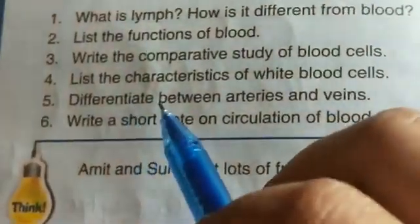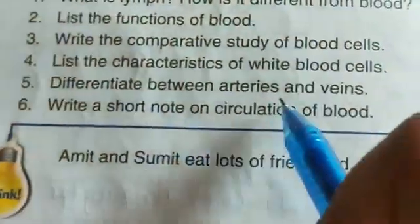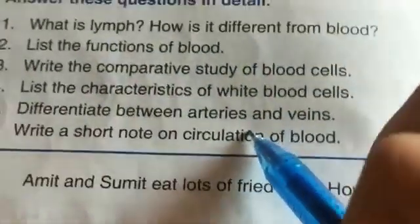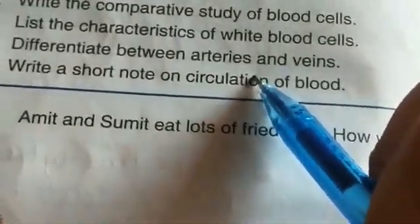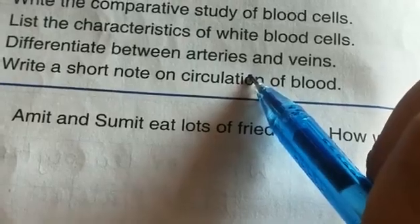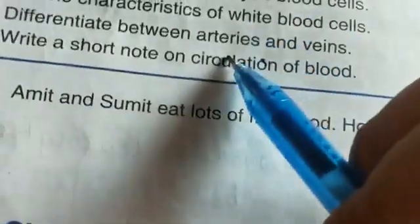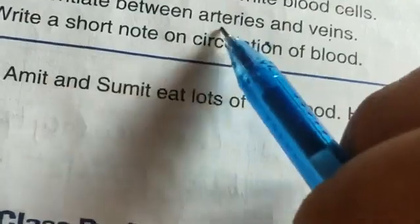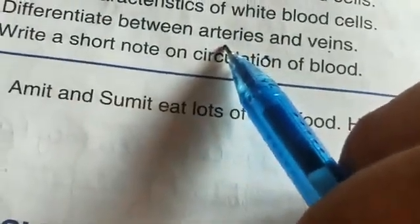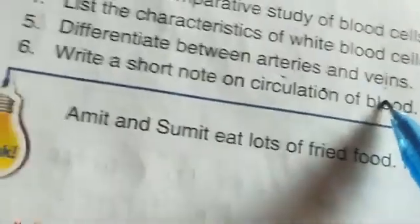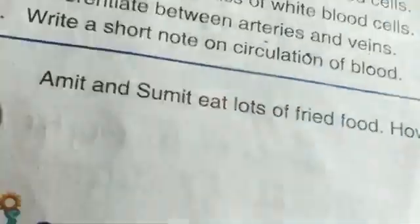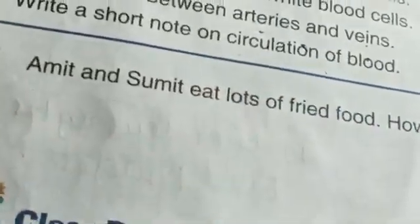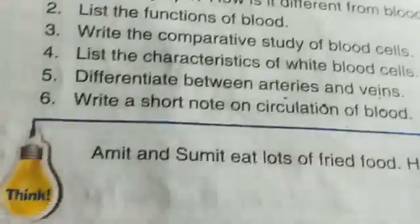Differentiate between arteries and veins: arteries are blood vessels which carry blood away from the heart, while veins carry blood to the heart. Arteries carry pure blood; veins carry impure blood. Blood in arteries flows with great pressure, while in veins the pressure is not so great.